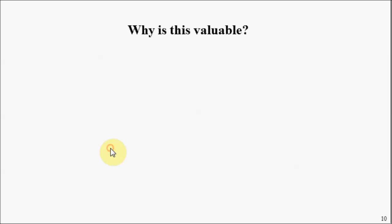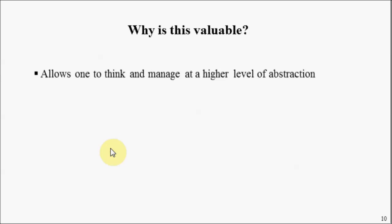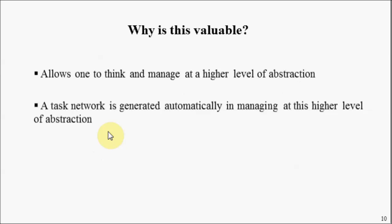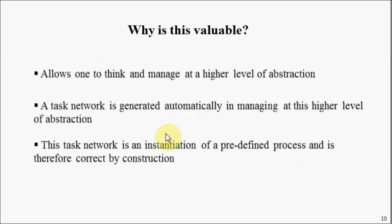So why is this valuable? We've demonstrated the ability to think in terms of a higher level of abstraction. If we've predefined an entity such as a house and instantiate it, we automatically get its definition instantiated for us. A task network is generated automatically from this higher level of abstraction — we're able to create a PERT chart by instantiating this process definition. And because we are instantiating a pre-defined process definition, the project plan is going to be correct by construction.